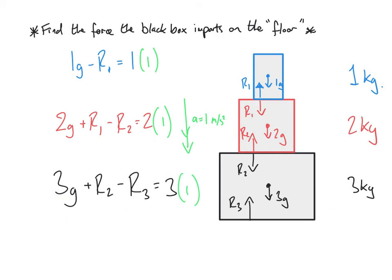Now, if we look at a new question, finding the force the black box imparts on the floor. Well, that force strictly hasn't been shown yet. So if we draw in the floor and an equal and opposite force to R3, that green force is the force we're being asked to find. We're not going to find that force, though. We're going to find R3 because they are equal and opposite. So we're looking for this force.